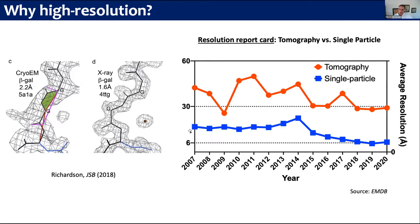This plot I'm showing here is what I call the resolution report card for cryo-electron tomography. I went to the EMDB and pulled out the average resolution for single particle and for tomography for the different years since 2007 to 2020. The single particle one is shown in blue - you can see the onset of the resolution revolution. If you fast forward to 2020, the average resolution of single particle cryo-EM structures in the EMDB is actually around six Angstroms. If you look at the same numbers for tomography, it's obviously much worse - in 2020 that average resolution is at about 30 Angstroms. So there is a huge difference, going from six to 30.